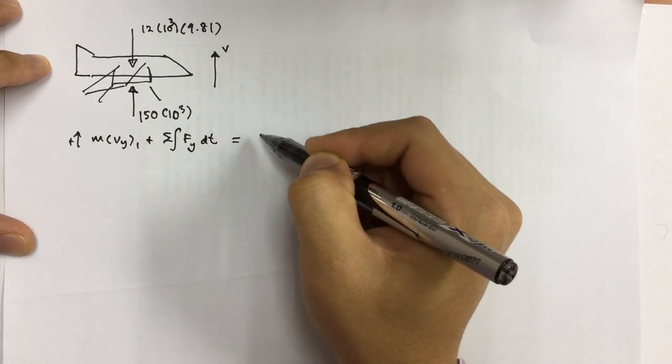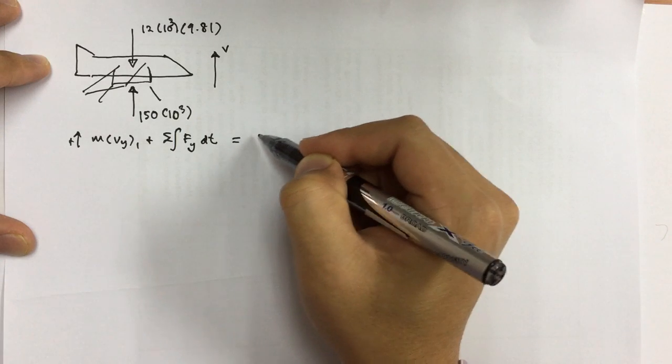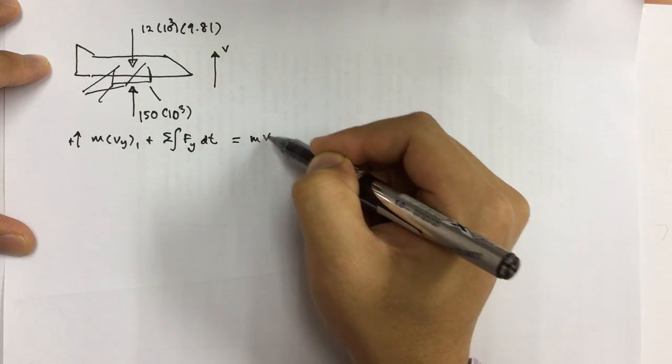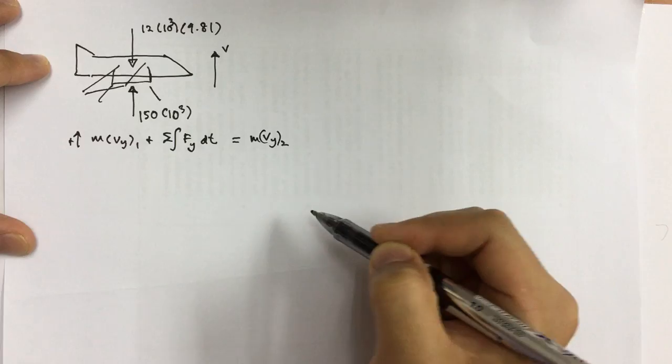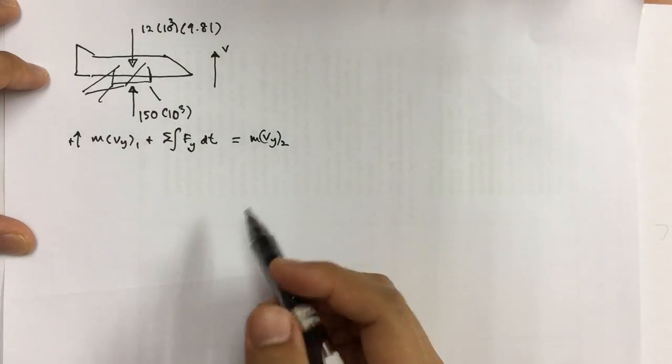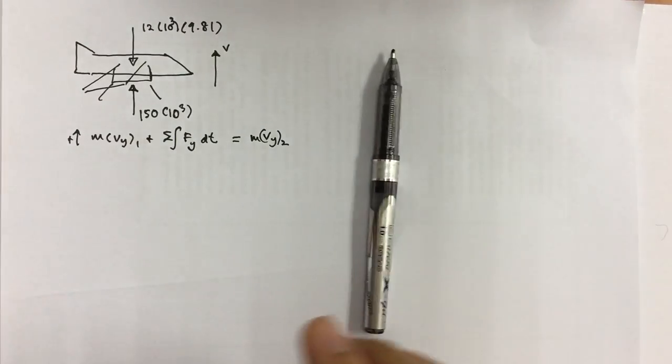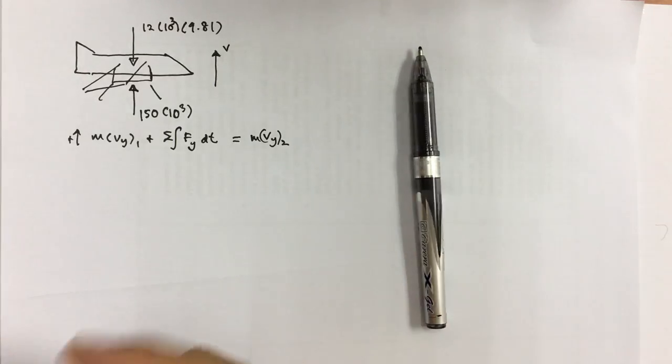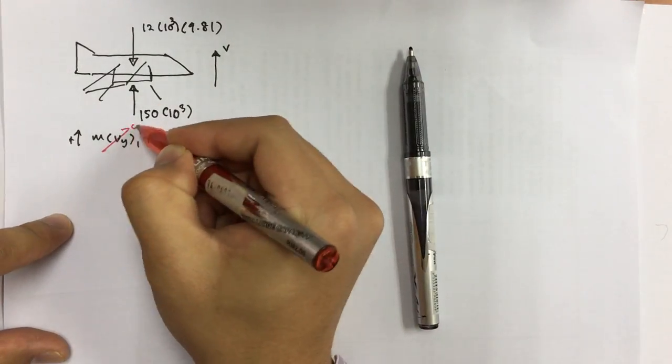And then we have the final velocity times mass. So this is basically our starting part. So since we know that the initial velocity is equal to zero, so this is going to be zero.